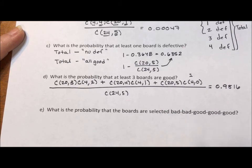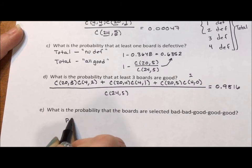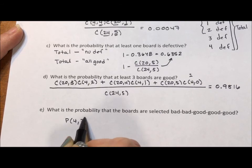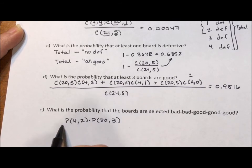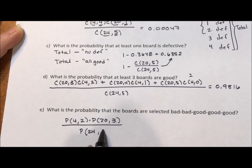When you go to order mattering, you have to go to permutation for everything. Don't mix and match your C's and your P's. We have the permutation of the four bad boards taken two at a time times the permutation of the 20 good ones taken three at a time. Notice we still have 24. We still have five. We divide by the permutation of the 24 boards taken five at a time.